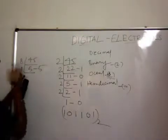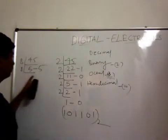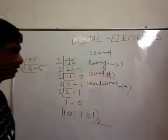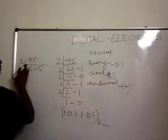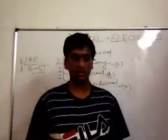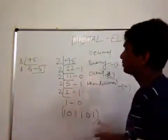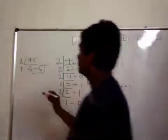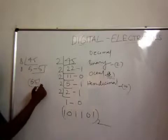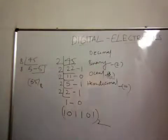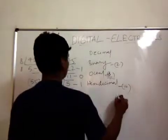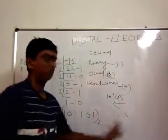I can't divide further, so I adjust with 5 and 5. That gives my octal number as 55 base 8. For hexadecimal, all I have to do is divide 45 by 16 and write down the remainders.